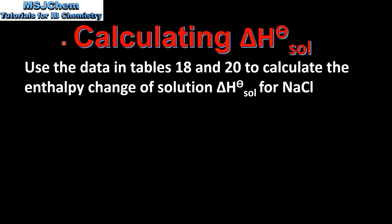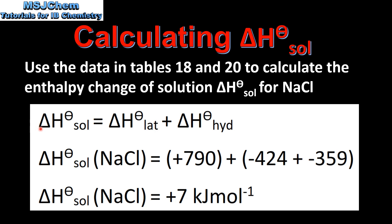Let's try an example. Use the data in tables 18 and 20 to calculate the enthalpy change of solution for sodium chloride. From the enthalpy cycle, the enthalpy change of solution equals the lattice enthalpy plus the enthalpy change of hydration. The lattice enthalpy for sodium chloride is +790 kJ/mol. The enthalpy change of hydration for the sodium ion is −424 kJ/mol, and for the chloride ion is −359 kJ/mol.